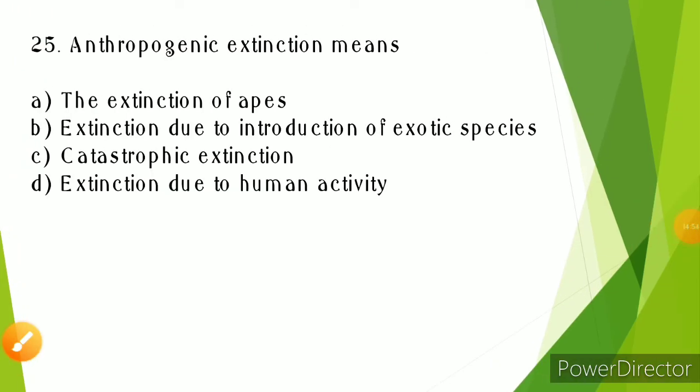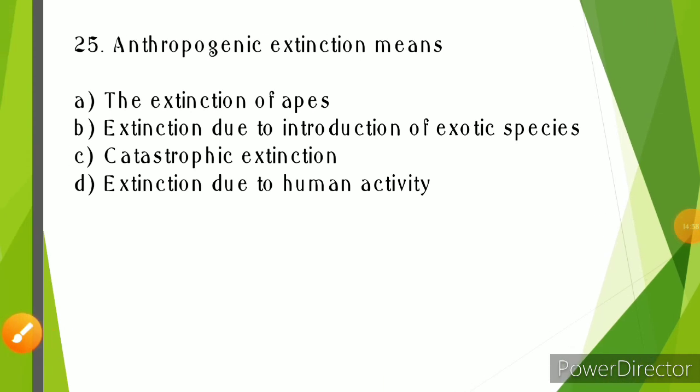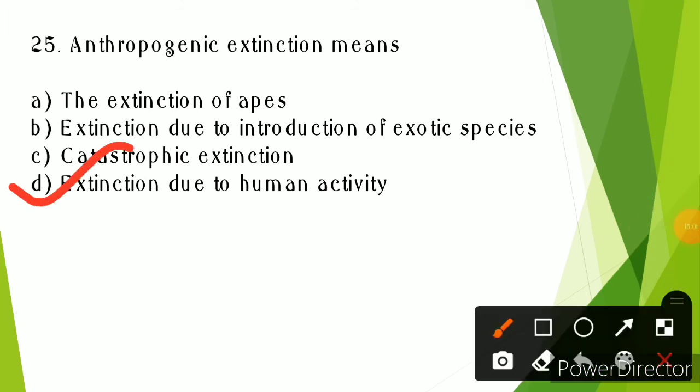Anthropogenic extinction is extinction due to human activity. Human activities like meat consumption, overfishing, and ocean acidification all contribute to anthropogenic extinction.